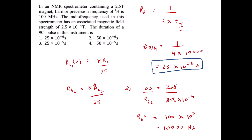The next question: in an NMR spectrometer with a 2.5 tesla magnet, the Larmor precession frequency of a proton is 100 MHz. The radio frequency used has an associated magnetic field strength of 2.5 × 10⁻⁴ tesla. They ask for the duration of a 90-degree pulse. The formula for a 90-degree pulse is RF = 1 / (4 × t_{π/2}), where t is the pulse duration. We do not know the RF directly, but the associated magnetic field is given.